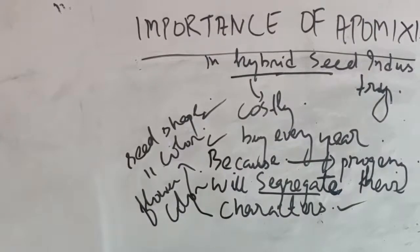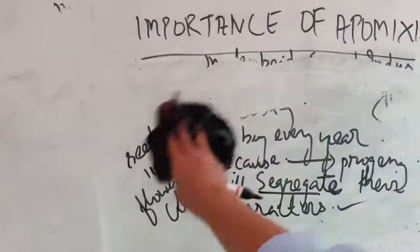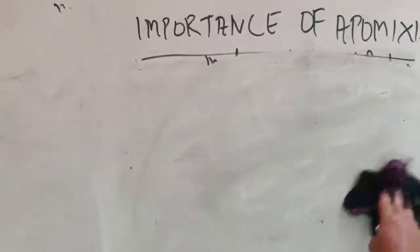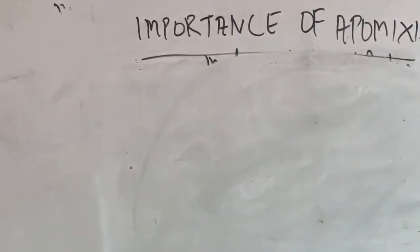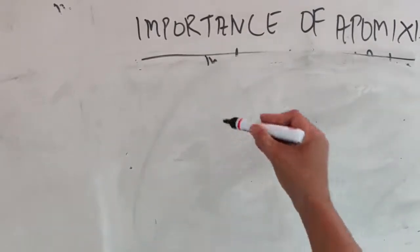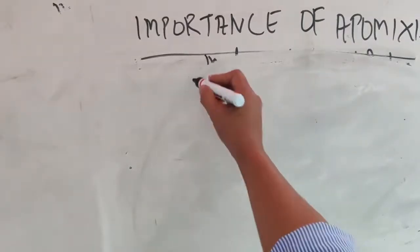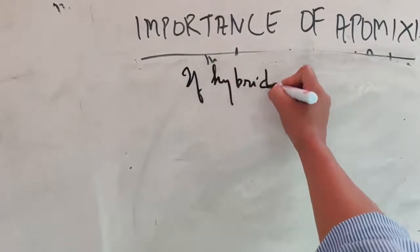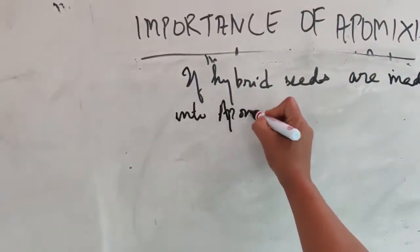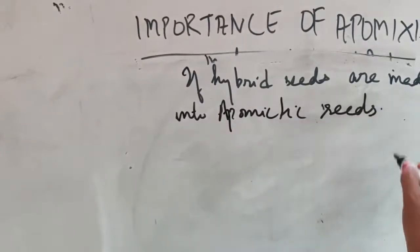So we can use apomictic seeds every year, in the next generation, without throwing away costly hybrid seeds. The main aim is: if we can make hybrid seeds into apomictic seeds, then since seeds are formed without fertilization, there is no mixing of male and female characters and there will be no segregation. Whatever good characters the hybrid has, all those characters will be maintained because there is no fertilization.